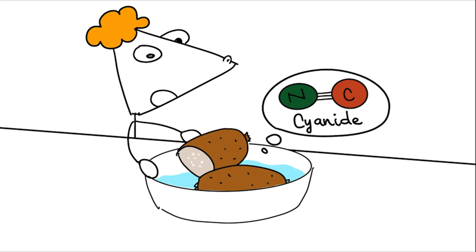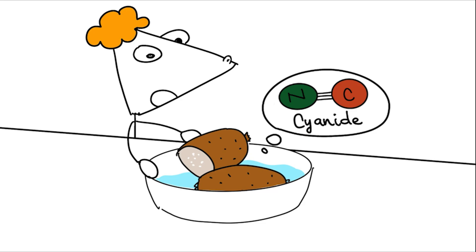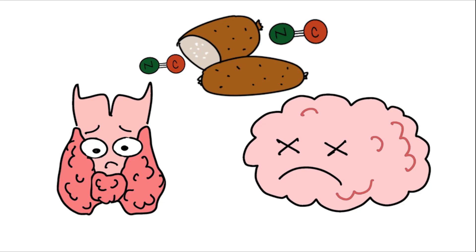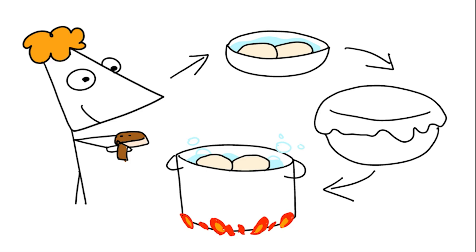Skip any step and the toxin remains dangerous, even without acute poisoning. Eating improperly prepared cassava over time can damage the thyroid and brain. Yet millions around the world eat cassava every day. The key is proper handling.